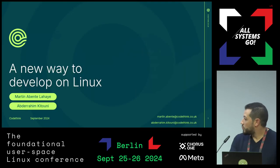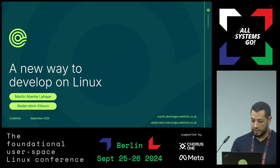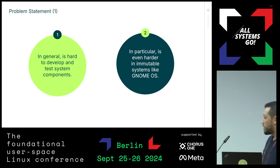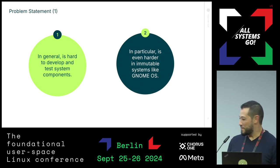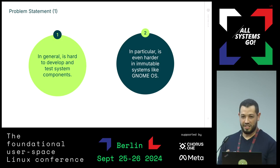We want to develop a new way to develop on Linux, and especially on immutable Linux distributions. In general, it's hard to develop and test system components — things that may break your system — and it's in particular even harder if the system is immutable.